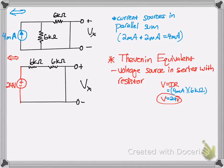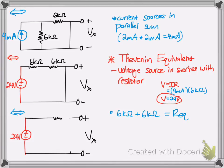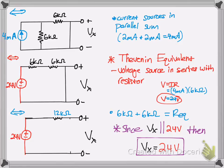So now that we have that, let's look at rearranging this circuit since the 6 ohms and the 6 ohms are in series. We can just sum them up, and that would be our R equivalent, which is 12. Since Vx is actually in parallel with the 24 volts here, when two voltages are in parallel, that means they have the same voltage. So Vx is actually equal to 24.